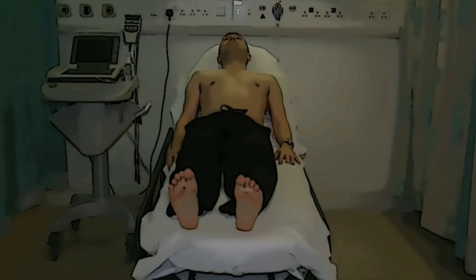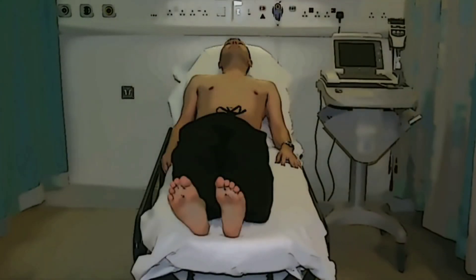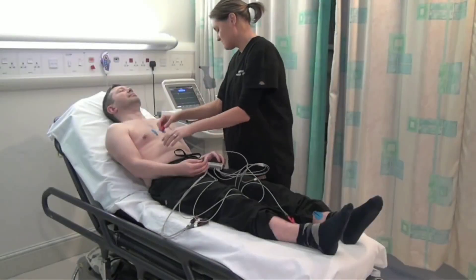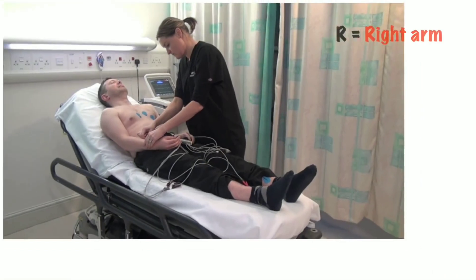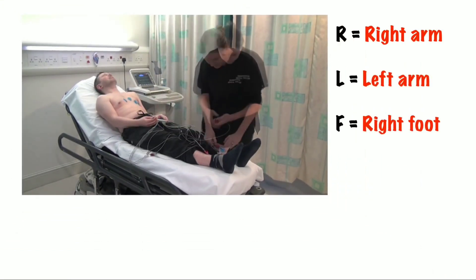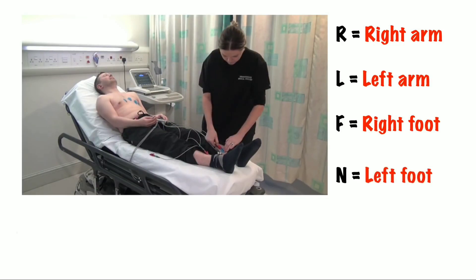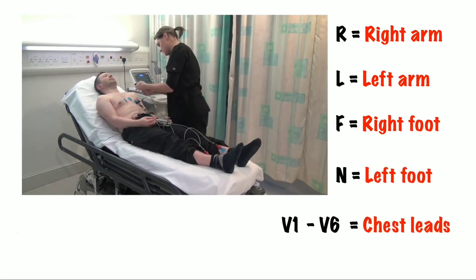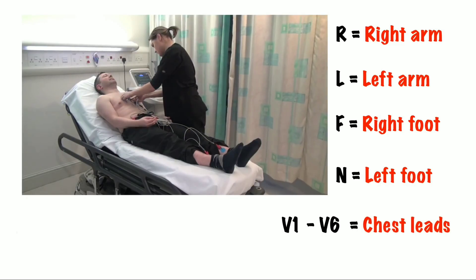Try to do an ECG from the patient's left side if possible, so that you don't have to lean over the patient. Next step is attaching the leads properly in this sequence: right upper limb, left upper limb, right lower limb, and left lower limb. Finally, attach the chest leads from V1 to V6, or sometimes named as C1 to C6.